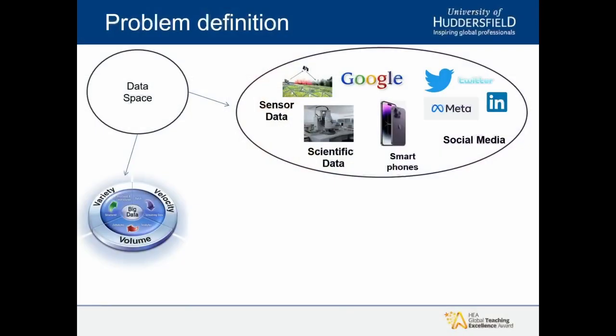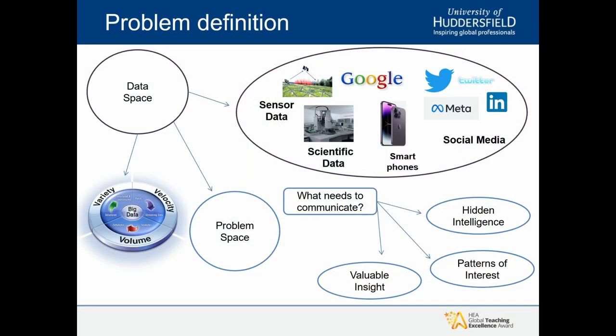What is the problem? We are collecting data at large velocity, volume, and variety from all kinds of resources. Thanks to the Internet of Things, we can now collect data from smartwatches, weather sensors, and social media platforms like Instagram, Facebook, and LinkedIn, which produce enormous amounts of data every millisecond. When we have this large amount of data, the question is: what exactly do we need to communicate or know from it? What insight can help us take the right decision, and who decides what the right information is from all that data collected every second?